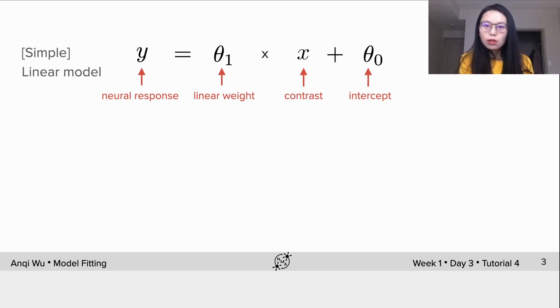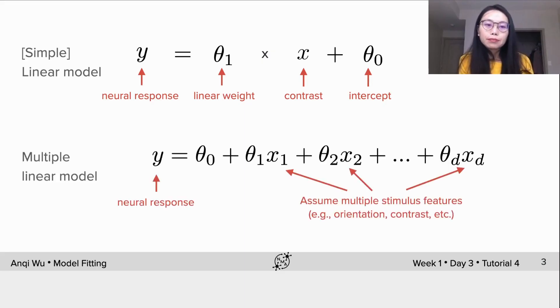In this tutorial, we will further extend the scalar input to multiple inputs with the scalar output, written as this. While y is still the neural response, x1, x2 all the way to xd are multiple stimulus features, such as orientation, contrast, etc.